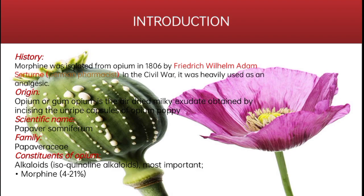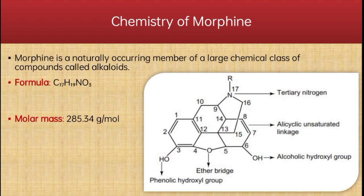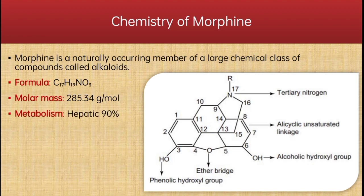Moving towards the chemistry of morphine: morphine is a natural member of a large chemical class of compounds called alkaloids, having the chemical formula C17H19NO3 with a molar mass of 285.34 grams per mole. Its metabolism mainly occurs in the liver, about 90%. It is soluble in alcohol as well as water.